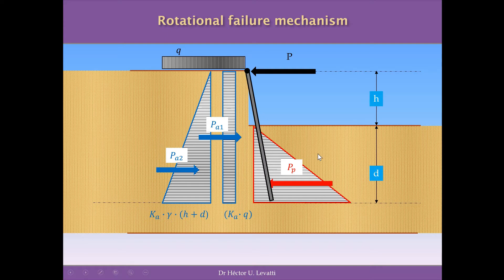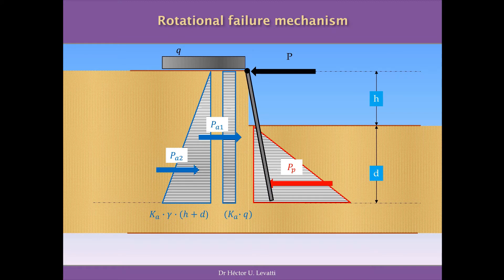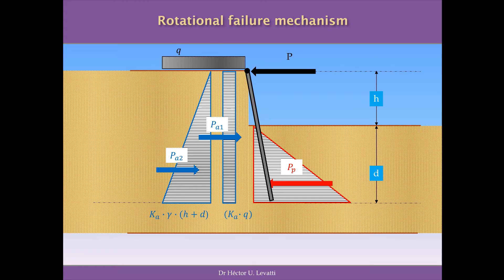The mechanism in this case, as you can see, is a rotation again, but because we have this force P additionally to the other forces, the mechanism will be rotation around a point on top of the wall, which is different from the previous case where we had this mechanism at the bottom of the wall. So, this mechanism will be the mechanism of failure. We need to ensure that we have enough forces to keep this structure in equilibrium — basically, enough passive pressure to keep this wall in the vertical position.